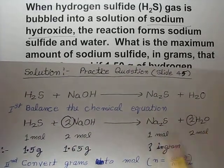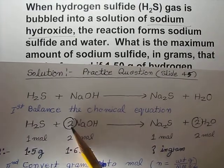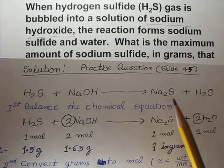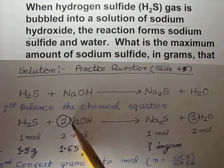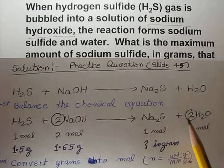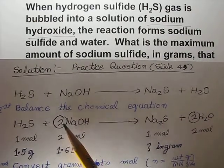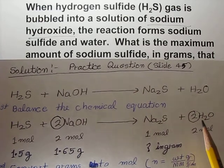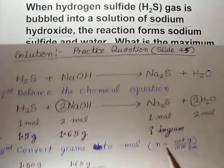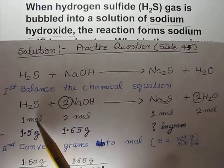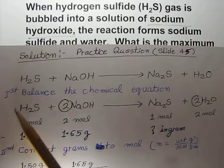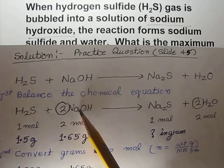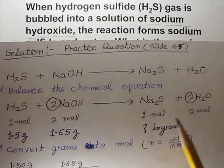First step: balance the chemical equation. H₂S gas has a coefficient of 1. We need 2 sodium on the reactant side, so we add a coefficient of 2 in front of NaOH. That gives 2 oxygen and 4 hydrogen on the reactant side, so we add a coefficient of 2 in front of water. Now the equation is balanced: 1 mole of H₂S reacts with 2 moles of NaOH to produce 1 mole of sodium sulfide and 2 moles of water.